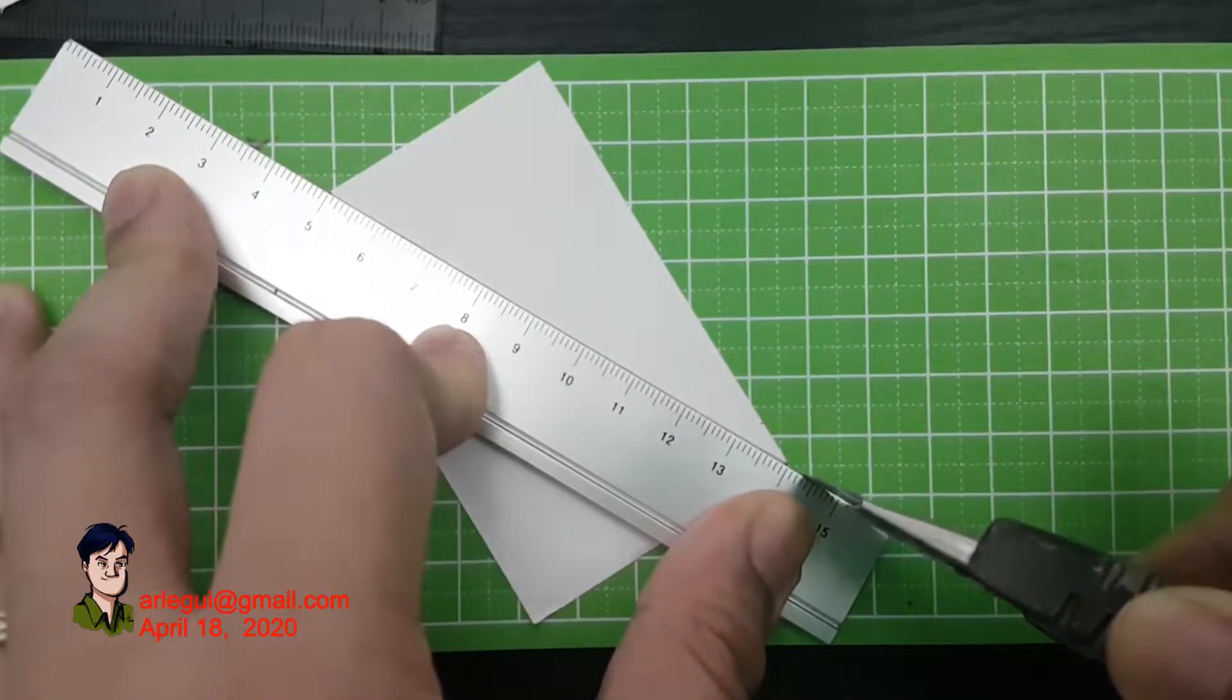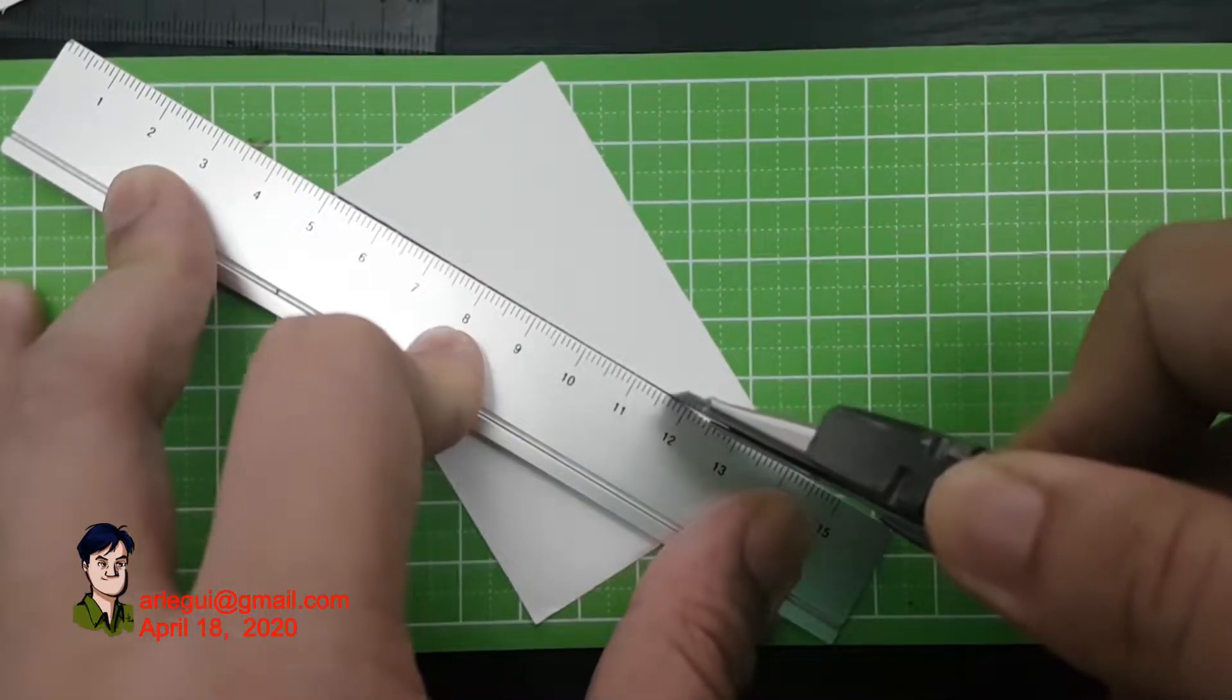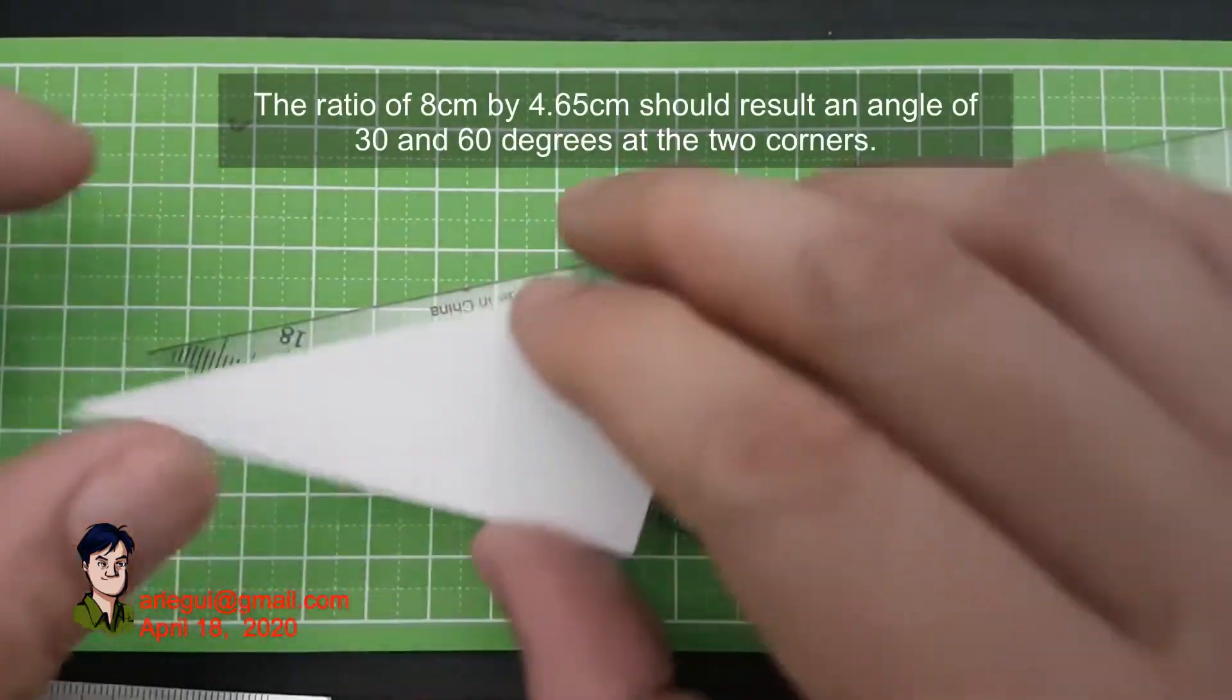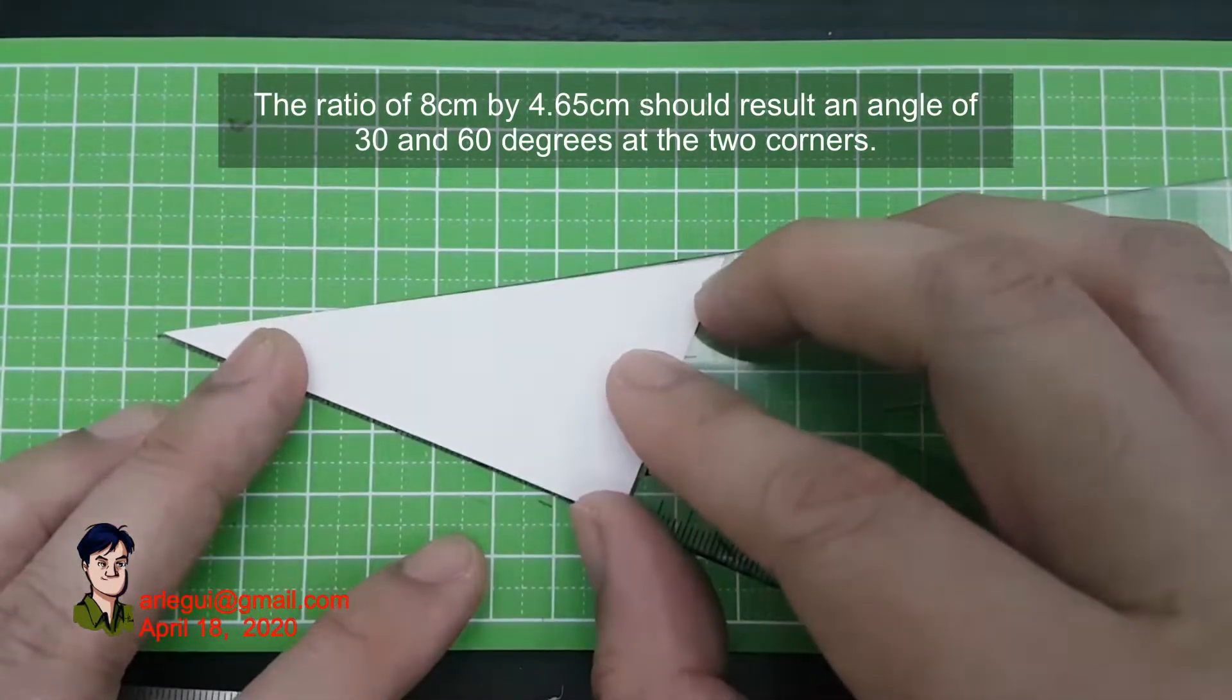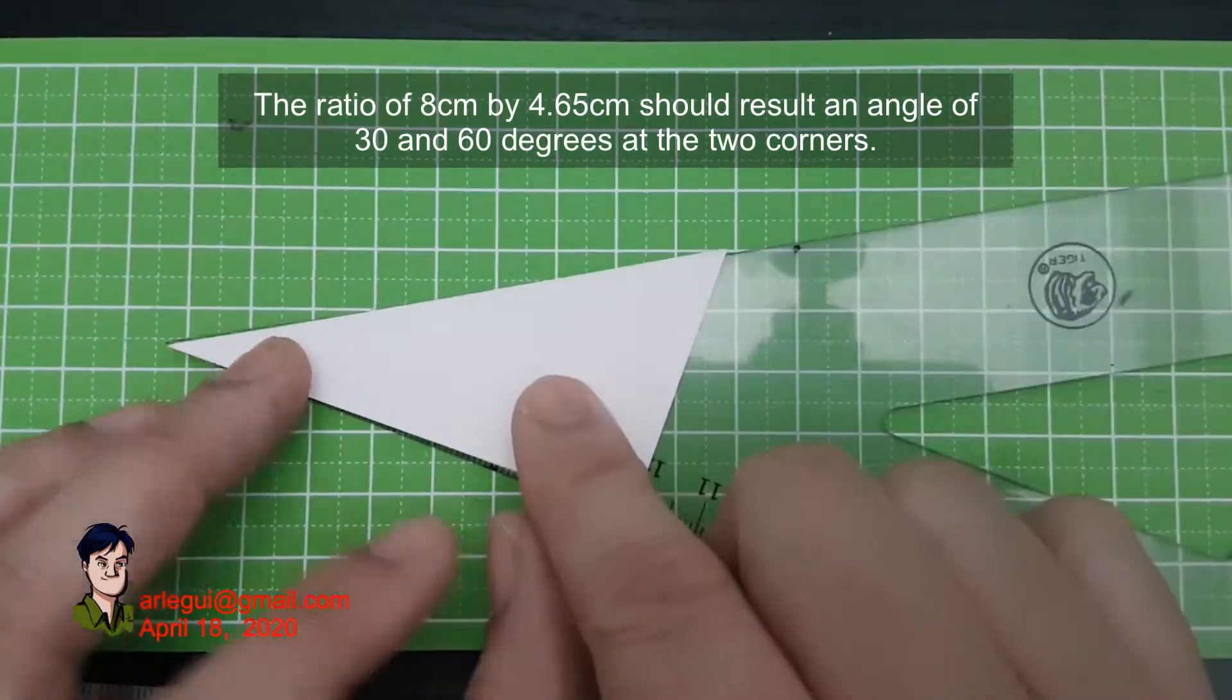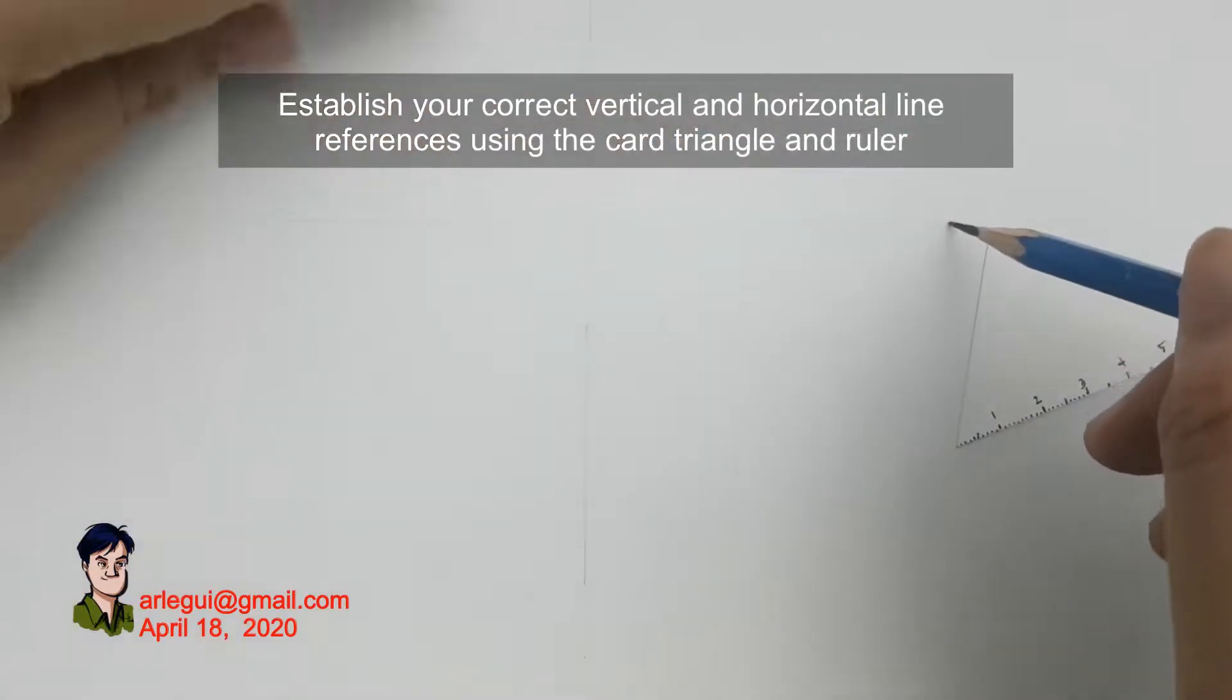So measure roughly about 8 centimeters by 4.65 centimeters and cut it. You will get something very similar to a 30 to 60 degree type of angle.